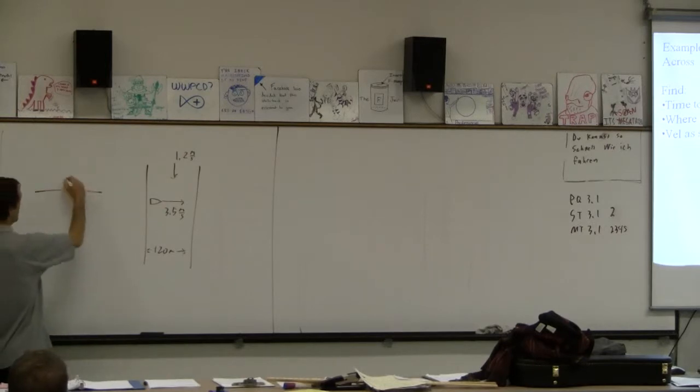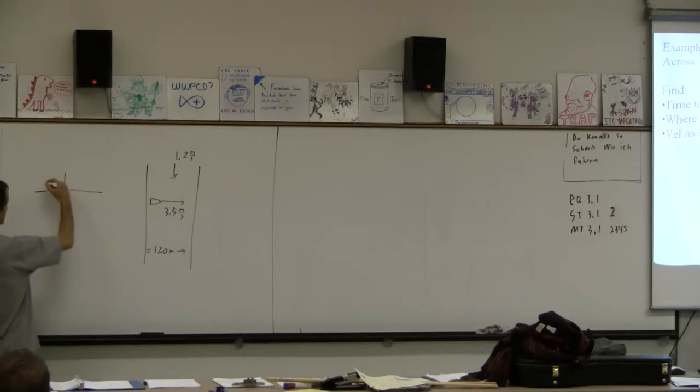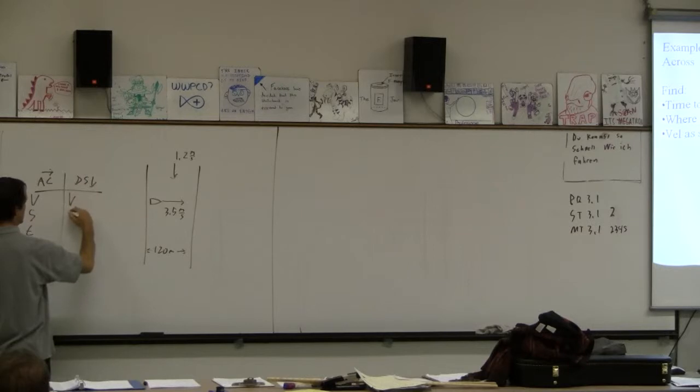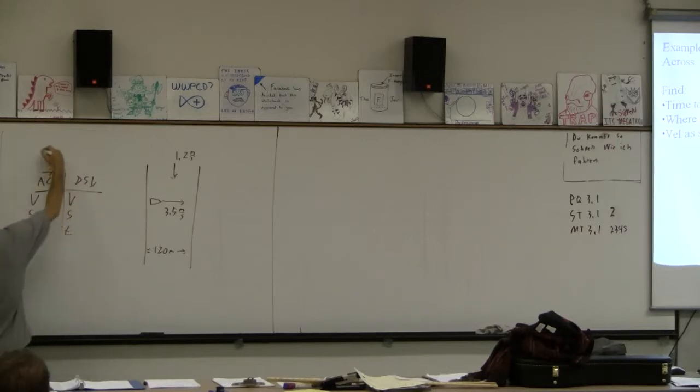And the good news is that we can solve this with one of these. And the really good news is that it's a really short one of these because we've got across the river and downstream. And then it's just V and S and T. And the only formula we ever use is just V is S over T. It's not even in the data packet, but velocity is displacement over time.